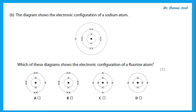To draw the electron configuration of a fluorine atom, we look at the periodic table. Fluorine is supposed to have nine electrons — its atomic number is nine. It is distributed two in the first inner shell and seven in the outer shell.